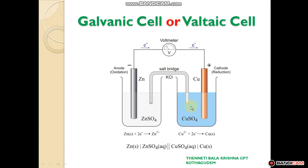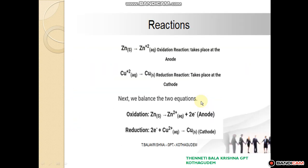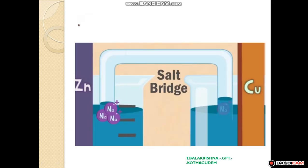In this case, the salt bridge plays an important role. It prevents the physical mixing of the two solutions but allows ions to pass from one half-cell to another. The salt bridge is filled with KCl or ammonium nitrate in gelatin.